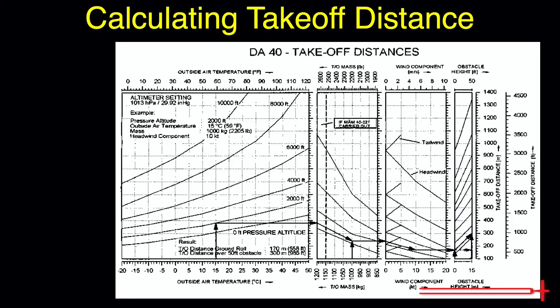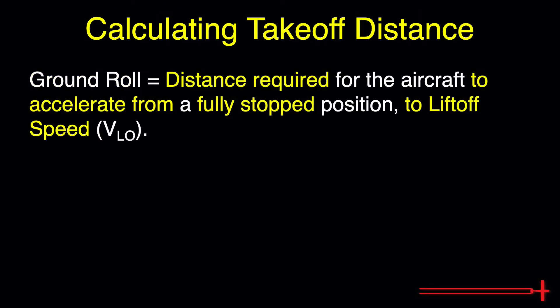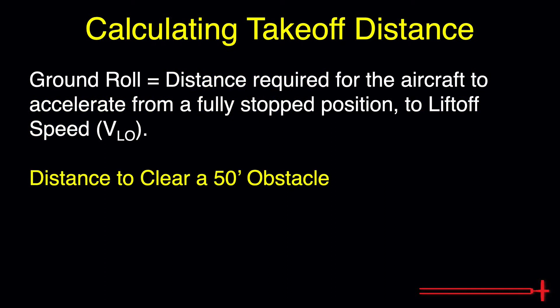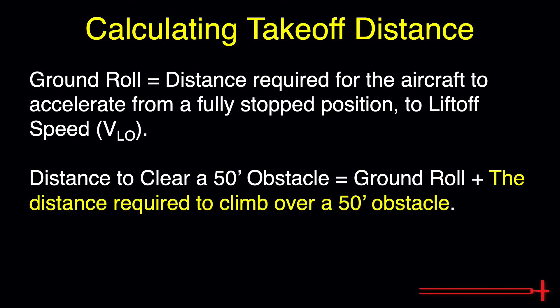This chart will give us both ground roll distance — which is the distance required for an aircraft to accelerate from the fully stopped position to lift-off speed — and distance to clear a 50-foot obstacle, which is the distance required to accelerate from a fully stopped position to takeoff speed, plus the distance required to climb over a 50-foot obstacle. We should pay especially close attention to both figures when operating from relatively short fields or those with obstacles at the departure end.